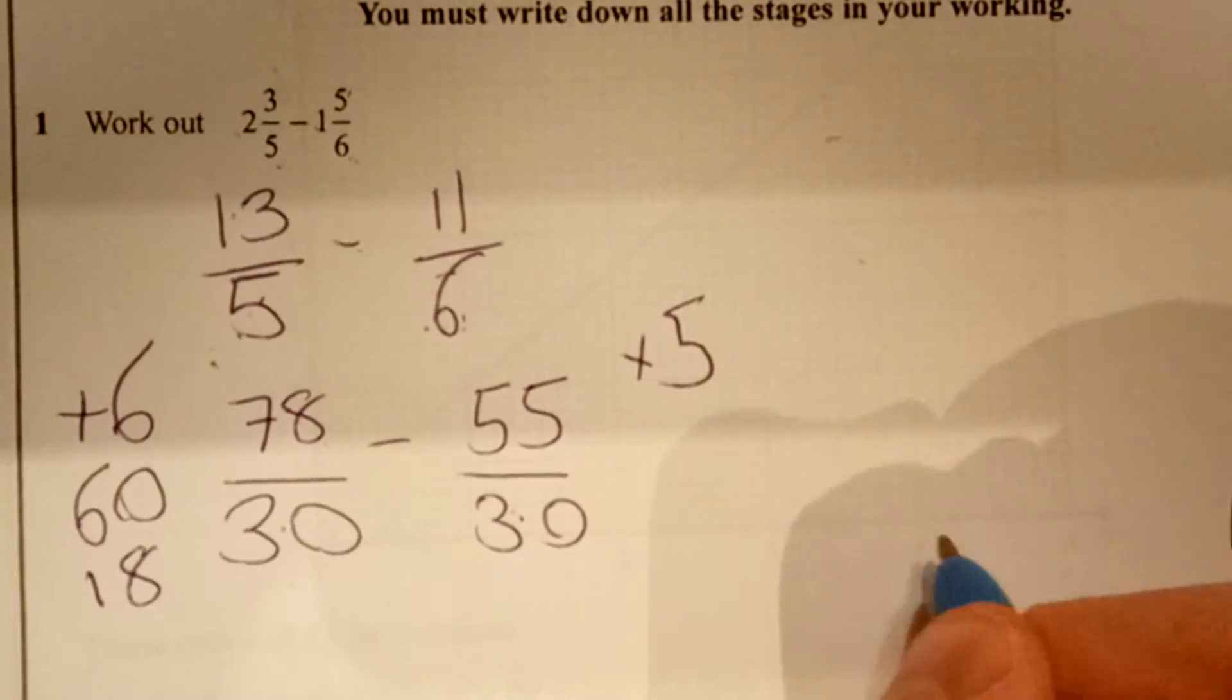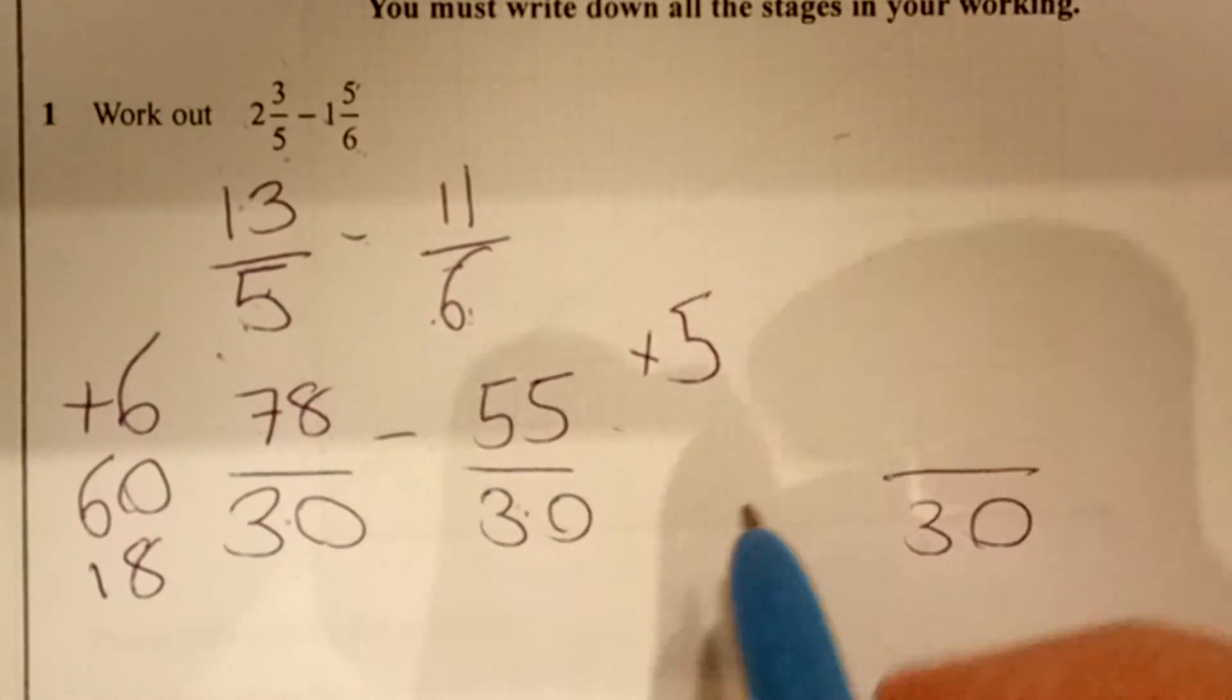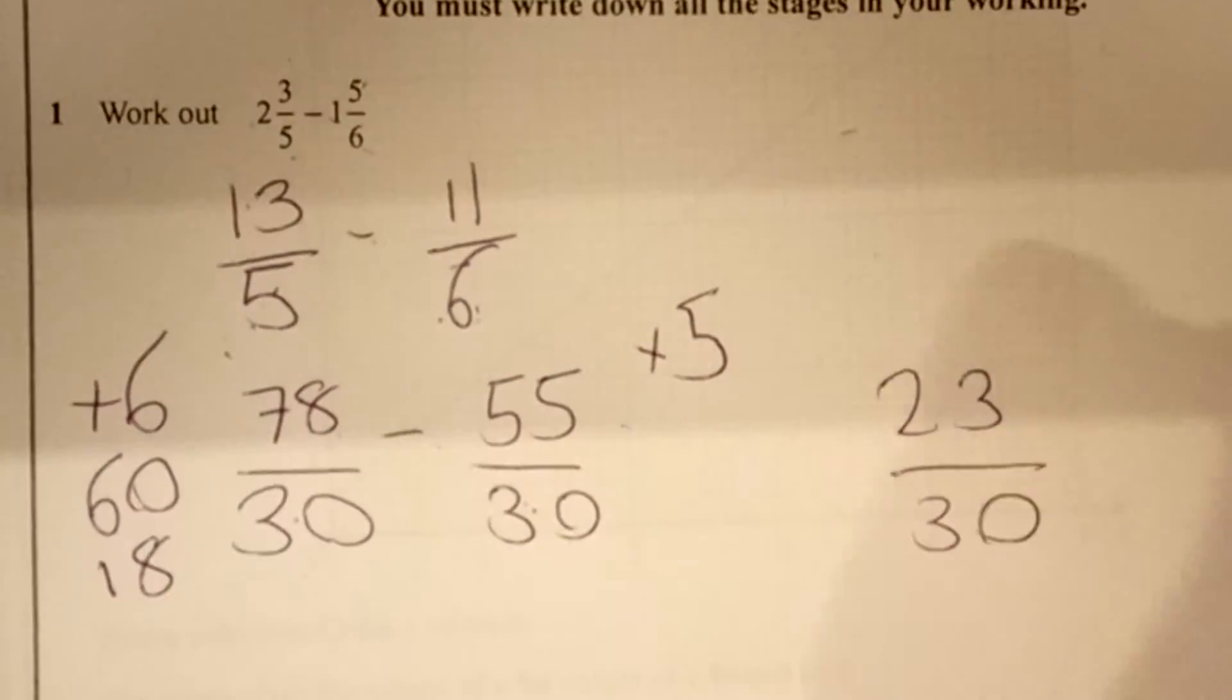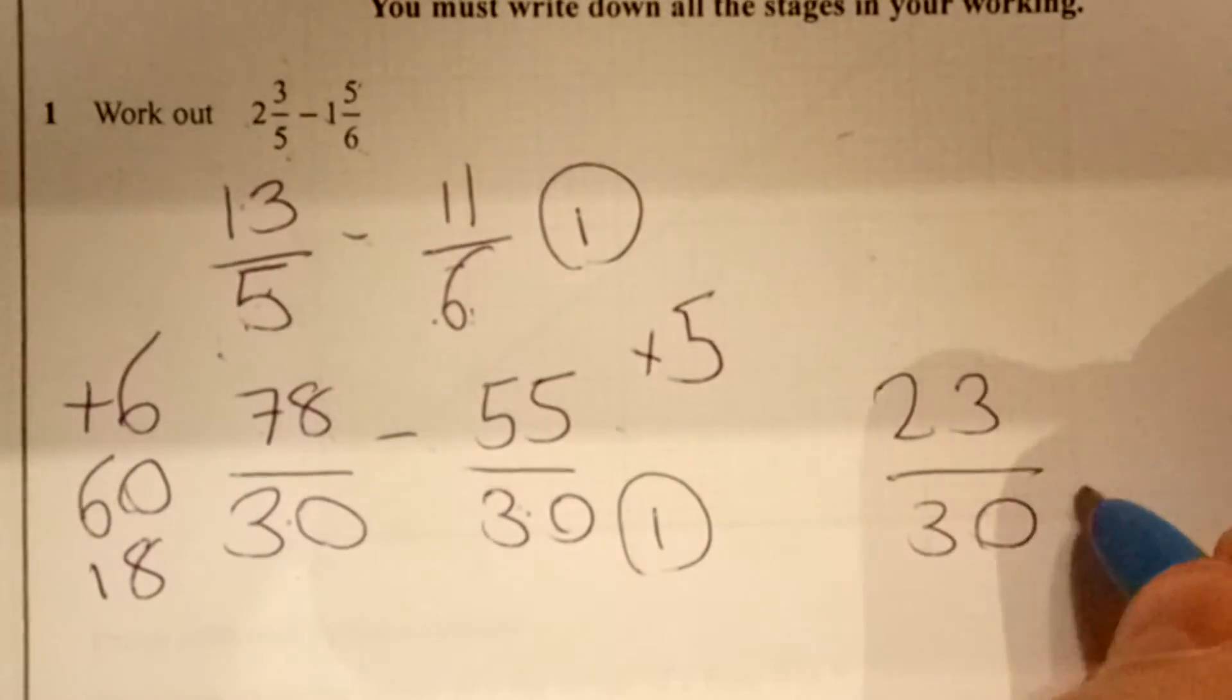means it's quite nice and easy. Our denominator stays the same and I've got 78 minus 55 which happens to be 23. You get one mark for this, you get one mark for that and the third mark for your last answer.